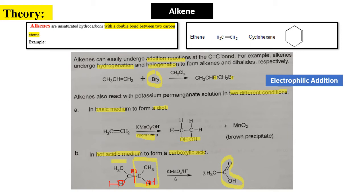For example, with a symmetrical compound, two ethanoic acid molecules are formed. The key conditions to remember: KMnO4 in basic medium at room temperature forms diol; KMnO4 in acidic medium under hot conditions forms carboxylic acid. This is an oxidation reaction.